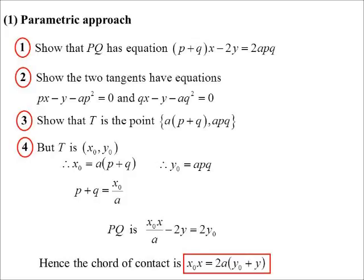Well, if I tidy that up a little bit more, something amazing happens. If I rewrite it, look at that equation. X0 X is equal to 2A(Y0 plus Y).